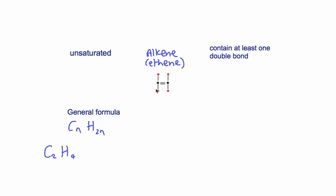As another example, if we had C₃, so three carbons, H would be two threes, so it would be six. The formula for this particular alkene is C₃H₆.